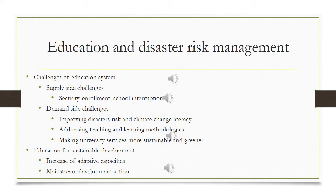Also, universities themselves and their administration have to think about how to make university services more sustainable and in many cases, greener. In the field called education for sustainable development, such issues are very important to be addressed. The final purpose of this kind of education is firstly to increase the adaptive capacities in case of disasters, and secondly to maintain development action within the education system.